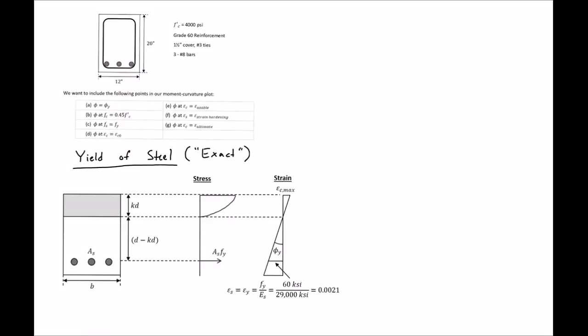In this video we're going to continue our example of looking at the moment curvature plots for reinforced concrete sections. We're going to continue with our fourth point looking at the point at which the steel yields. We'll use an exact procedure in which we use the actual concrete stress strain behavior and the yield stress of the steel.